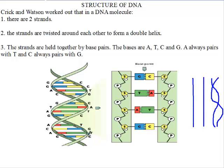So the first point is that there are two strands. Second point is that the strands are not straight as you see here, but rather they are coiled around each other to form a double helix.